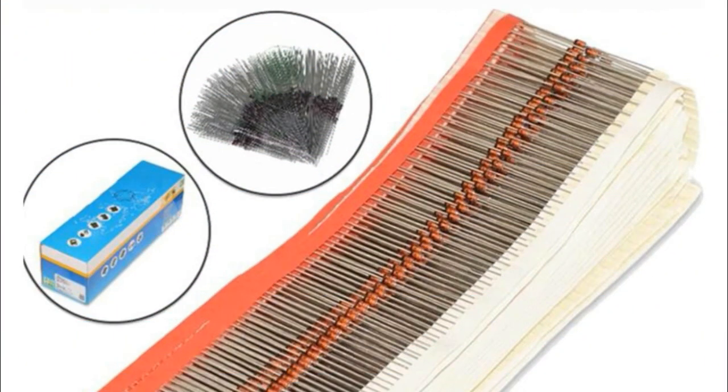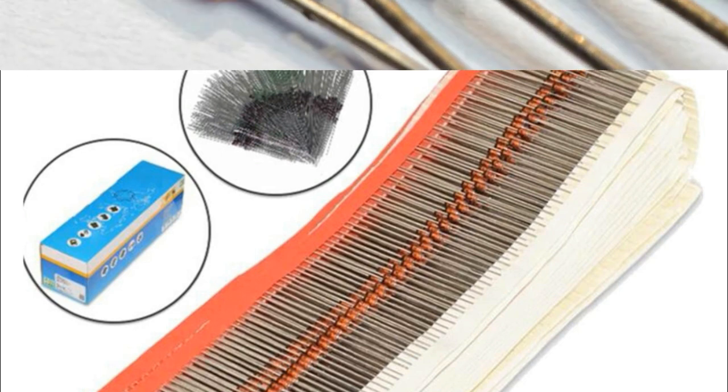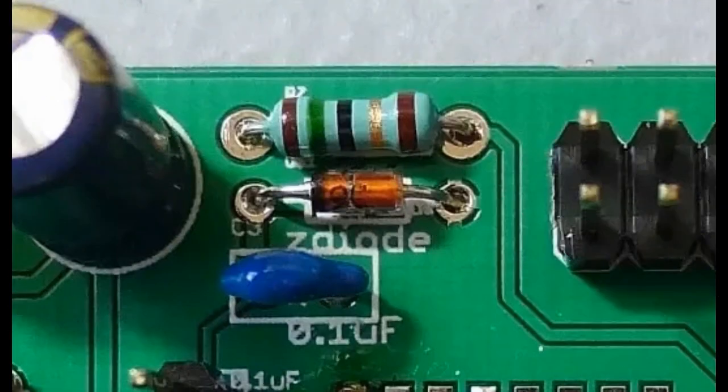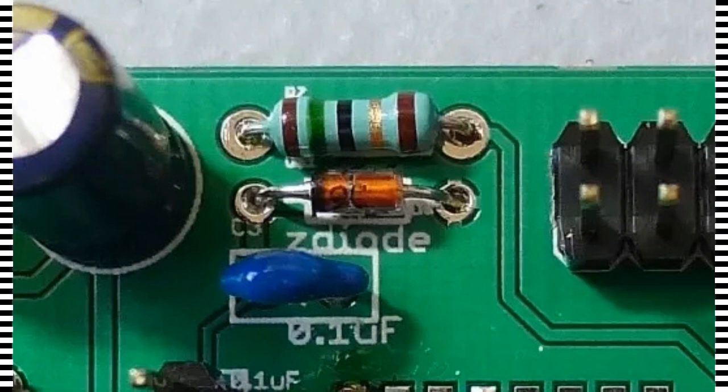500mW series Zener diodes are available from about 2.4V to about 100V and are usually the same size as 5% E24 series resistors. Separate voltage ratings are listed for these small but useful diodes.